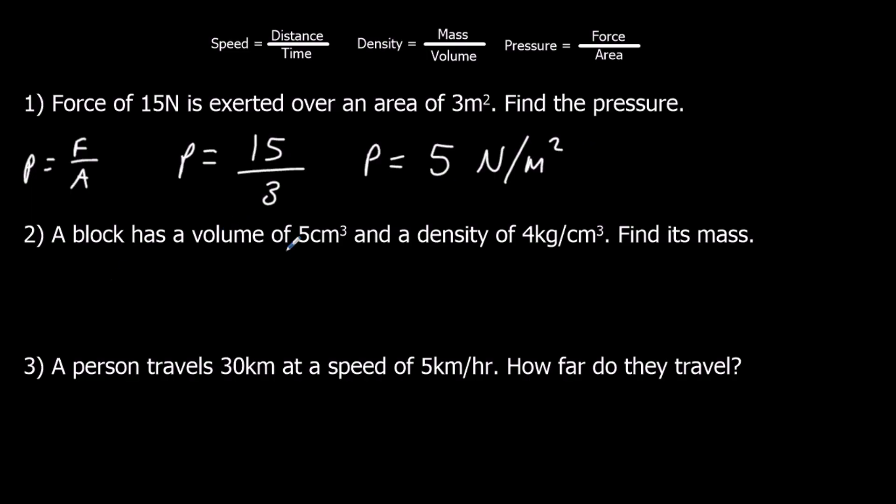A block has a volume of 5, density of 4, find the mass. Density equals mass over volume. Density is 4, volume is 5. The mass equals 4 times 5, which is 20. And it's in kilograms.